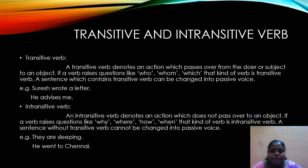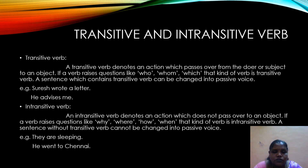An intransitive verb denotes an action which does not pass over to an object. So in a sentence, if the verb is intransitive, it will not have an object. If a verb raises questions like 'why,' 'where,' or 'how,' that kind of verb is an intransitive verb. A sentence without a transitive verb cannot be changed into passive voice. For example, in 'They are sleeping,' we don't have an object. In 'He went to Chennai,' Chennai is not an object — so 'went' is intransitive. To put it simply, if a sentence has an object it can be changed into passive voice; if not, it cannot.